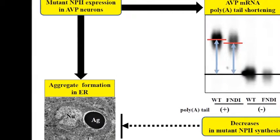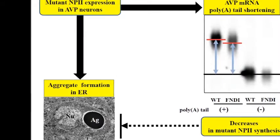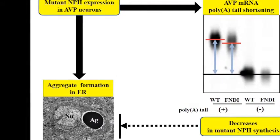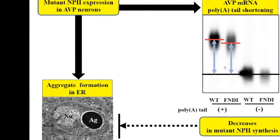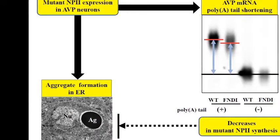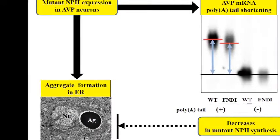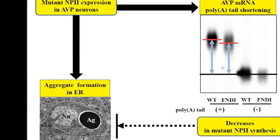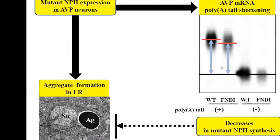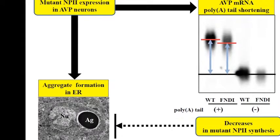In FNDI mice, there are aggregates in the endoplasmic reticulum of vasopressin neurons, and reduced vasopressin expression associated with decreased vasopressin mRNA poly-A tail length in the supraoptic nucleus.